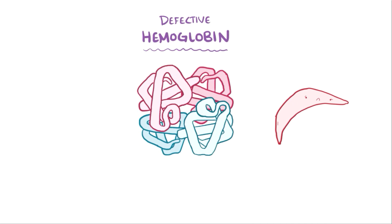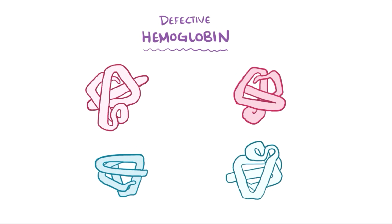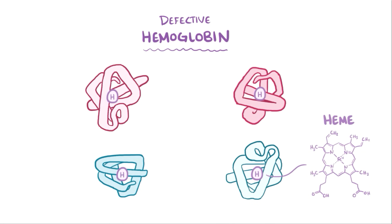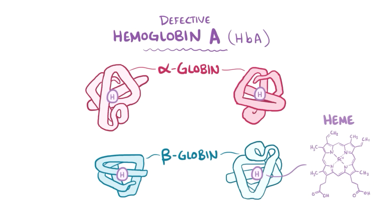Sickle cell disease is caused by defective hemoglobin, which is the oxygen-carrying protein in red blood cells. Hemoglobin is actually made up of four peptide chains, each bound to a heme group. Different hemoglobins have different combinations of these chains. Hemoglobin A, or HbA, is made up of two alpha-globin and two beta-globin peptide chains. This is the primary hemoglobin affected in sickle cell.